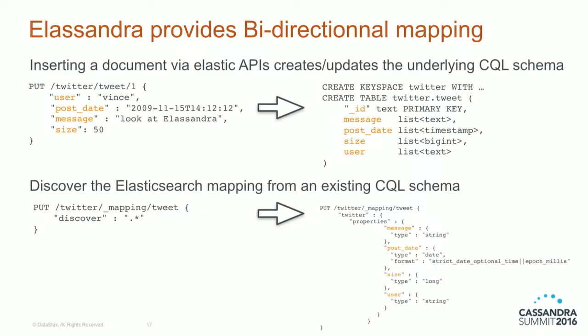If you are a Cassandra expert, you can also build the Elasticsearch mapping from the CQL schema. There is a new discover parameter where you specify which columns are discovered automatically by Elasandra — for example, all columns matching a regular expression. It automatically creates your mapping from your existing Cassandra table. This means that for Elasticsearch users, they don't need to learn CQL to use Elasandra, while Cassandra users can drive mapping from their existing schema.